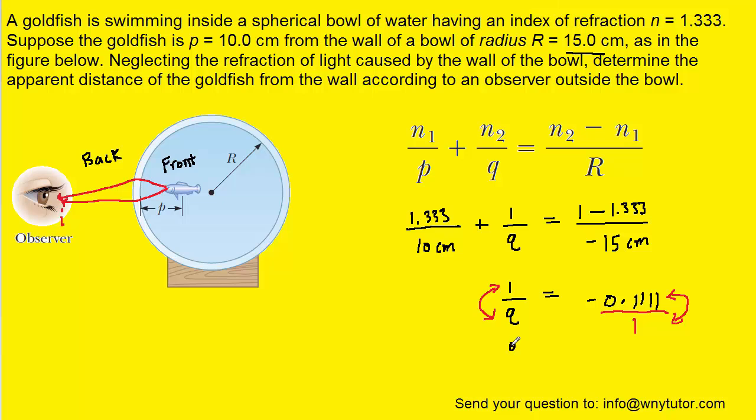And then we'll have 1 over negative 0.111. And when we type that into our calculator, we're going to get roughly negative 9 centimeters for the value of Q.